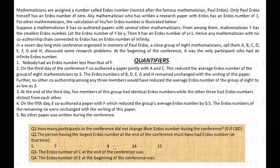Before we proceed, if you haven't attempted the set, I request you to pause the video right now and try the set once. Mathematicians are assigned a number called the Erdős number after the famous mathematician Paul Erdős. Paul Erdős himself has an Erdős number of zero.